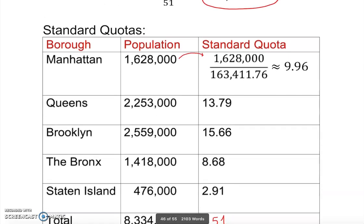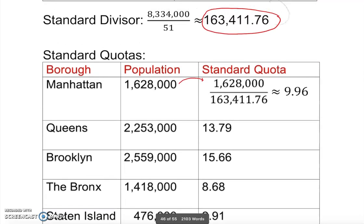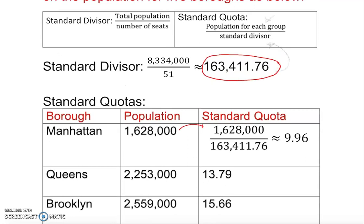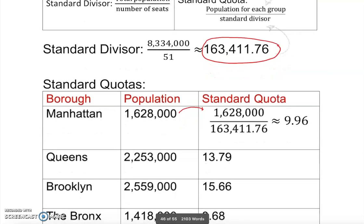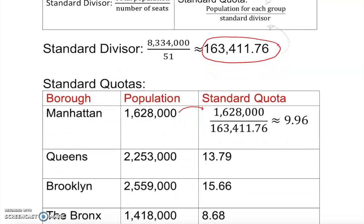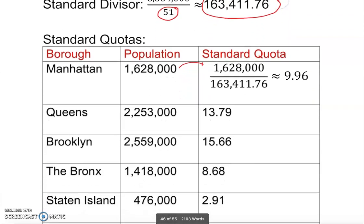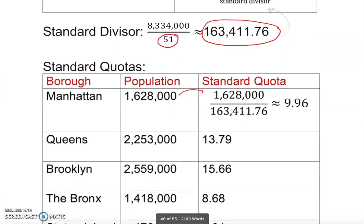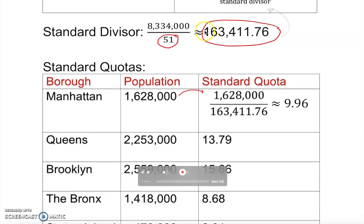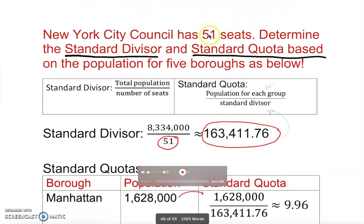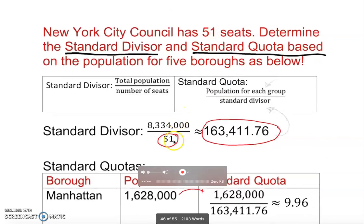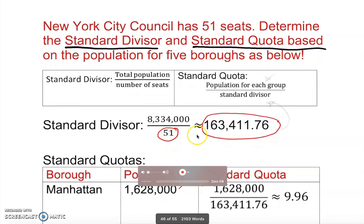To summarize: the standard divisor is total population divided by number of seats. Some students think we divide by five because there are five boroughs — but no, we divide by the number of seats we are looking for, which is 51, not five.